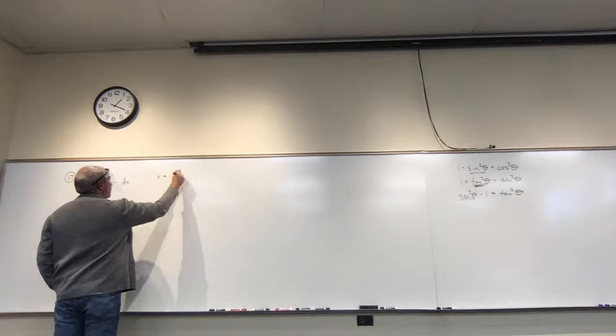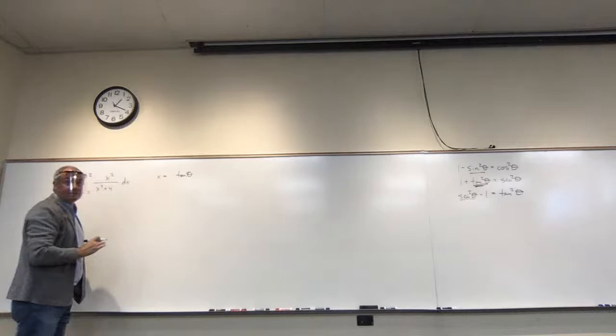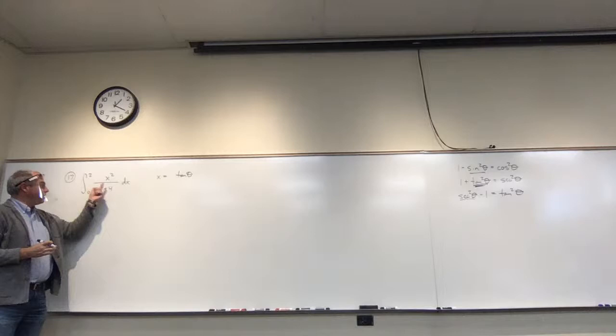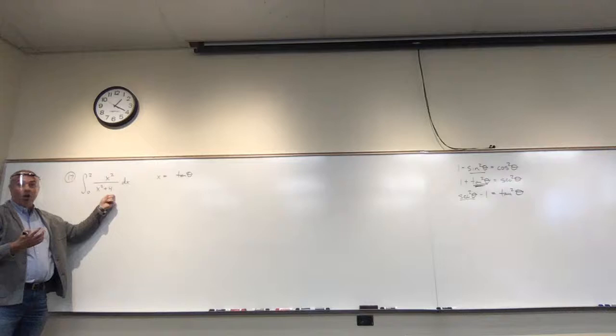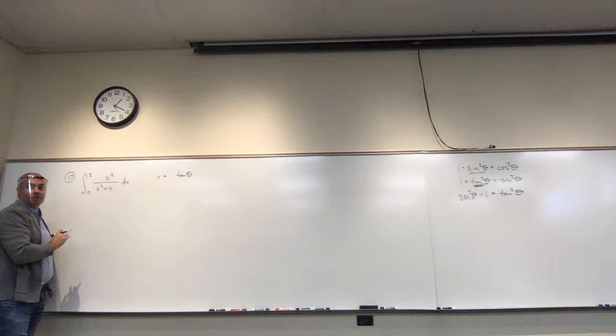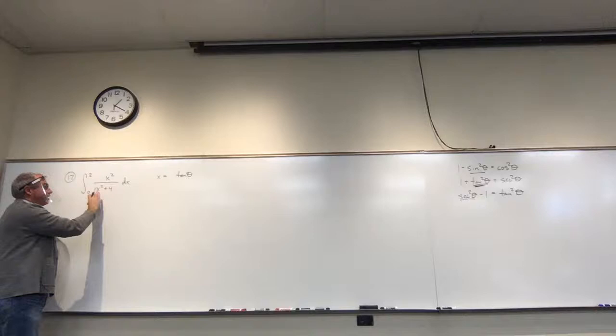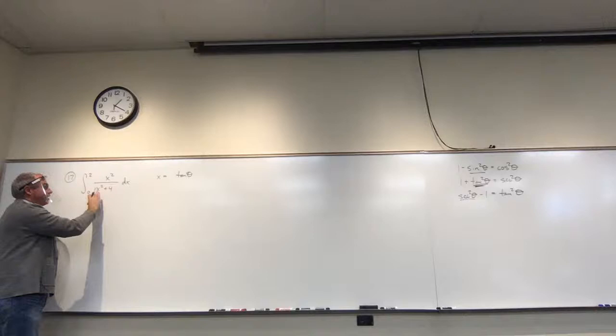We have x squared plus 4, not plus 1. So I want after substituting there to be a 4 in front so I can factor it out and get something squared plus 1. If I let x equal 2 tan theta, then squaring gives 4 tan squared theta, and the bottom becomes 4 tan squared theta plus 4, letting me factor the 4 out. So x equals 2 tan theta is the substitution. Then dx equals 2 secant squared theta d theta.